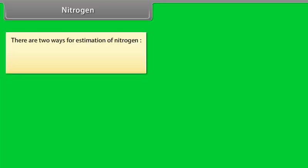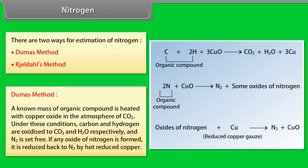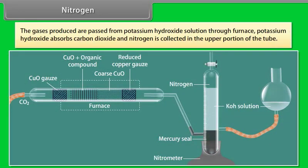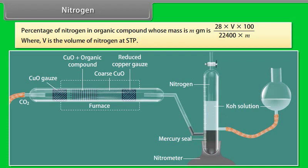Nitrogen — there are two methods for estimation of nitrogen: Dumas method and Kjeldahl's method. Dumas method: a known mass of organic compound is heated with copper oxide in the atmosphere of carbon dioxide. Carbon and hydrogen are oxidized to CO₂ and water respectively, and nitrogen is set free. If any oxides of nitrogen are formed, they are reduced back to nitrogen by hot reduced copper. The gases are passed through potassium hydroxide solution, which absorbs CO₂, and nitrogen is collected in the upper portion of the tube. Percentage of nitrogen = (28 × V × 100) ÷ (22400 × M), where V is the volume of nitrogen at STP.